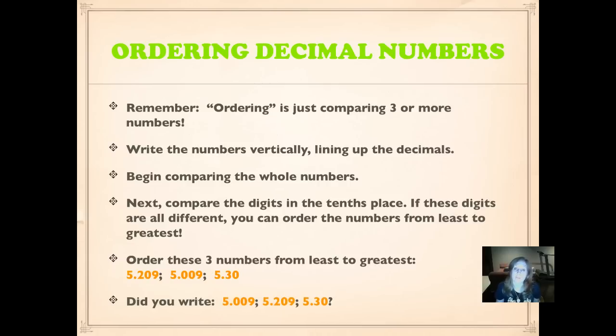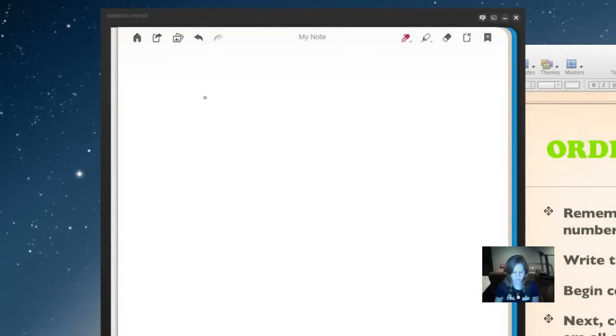Did you write them in this order from least to greatest? Five and nine thousandths was the least, the lowest number. Five and two hundred nine thousandths was the middle number, the number that came between the other two numbers. And five and thirty hundredths was the greatest number. Wait a minute. There it is again. We see a number that has less digits, but it's the greatest number. Compare those numbers in the tenths place. The zero and the two are less than the three. We can put them in order just based on the numbers in the tenths place.